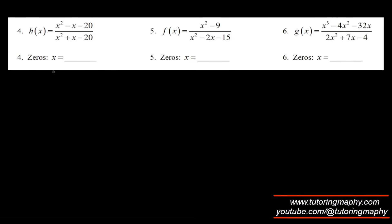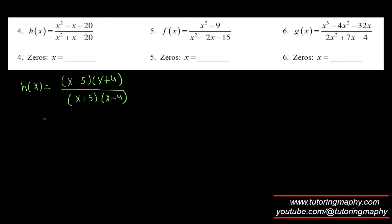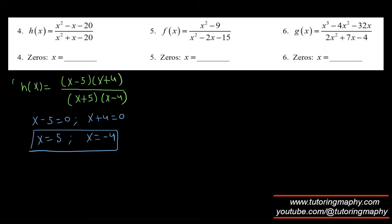For question four, we need to factorize h(x). The numerator factors as x minus five times x plus four, and the denominator factors as x plus five times x minus four. The numerator is zero when x equals five and x equals negative four. Neither value makes the denominator zero, so both are valid answers.